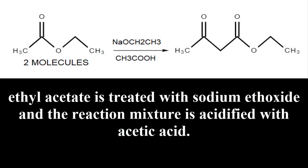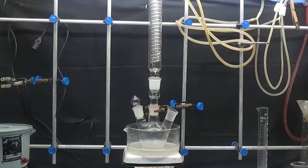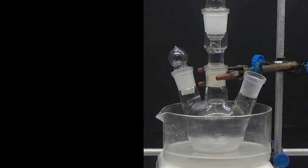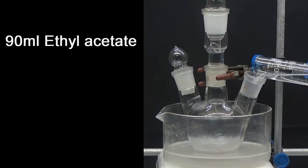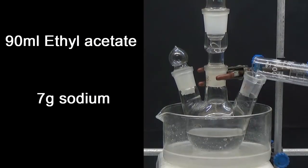To obtain ethyl acetoacetate, ethyl acetate is treated with sodium ethoxide and the reaction mixture is acidified with acetic acid. First, weigh 7 grams of sodium cut into small pieces in a vial with hexane. In a 250 ml three-necked flask in a water bath with a reflux condenser, put 90 ml of ethyl acetate and 7 grams of sodium in small portions with stirring.